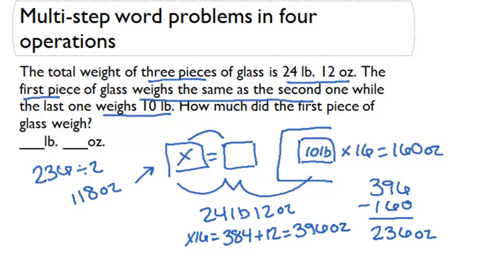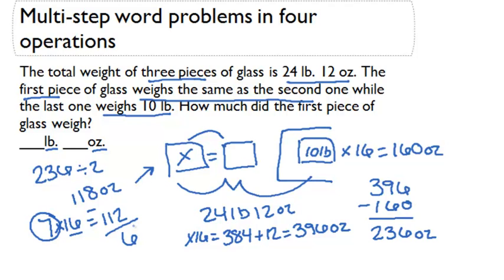Now 118 ounces — if I want to put that in pounds and ounces, I need to figure out how many whole pounds fit into it. 7 times 16 ounces equals 112, which is as close as I can get to 118 with multiples of 16. My remainder is 118 minus 112, which is 6. So I have 7 pounds and 6 ounces. The weight of the first piece of glass is 7 pounds and 6 ounces.